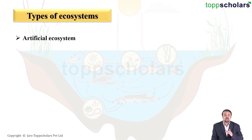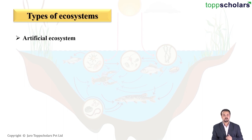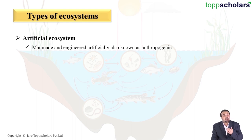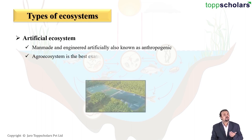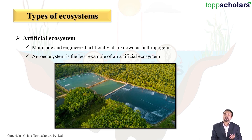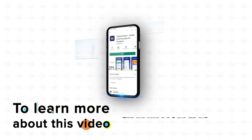There is another type of ecosystem other than the natural — that is the artificial ecosystem. It is any ecosystem which has been engineered or made by man, so we can also call it an anthropogenic ecosystem. A very good example, as you can see in the image, is the agro-ecosystem or simply a cropland. Other examples of man-made ecosystems include zoos, botanical gardens, aquariums, and even the cities in which we live.